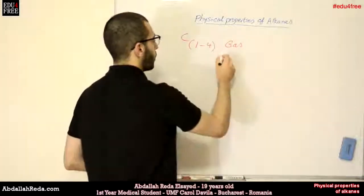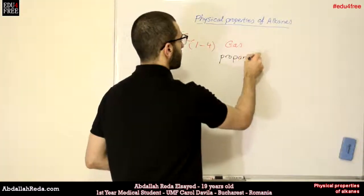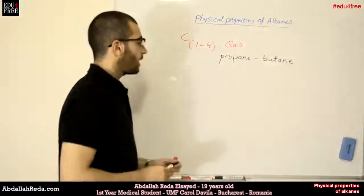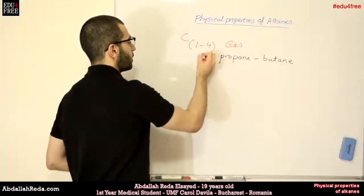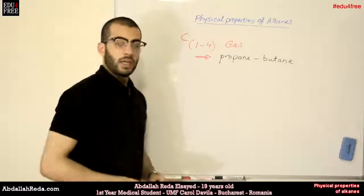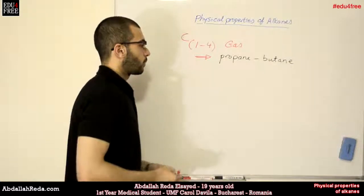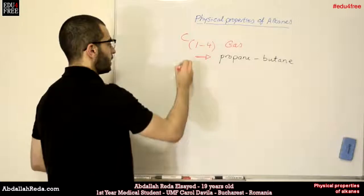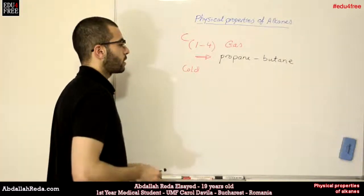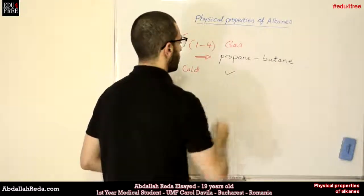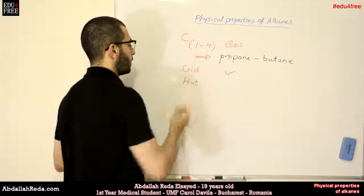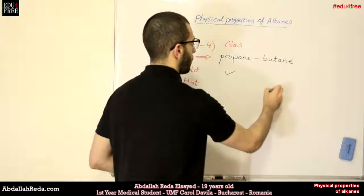Propane and butane are both used as gas for cooking and they are mixed together in proportions. In cold areas we will find in the mixture more propane than butane. In hot areas we will find the opposite, more butane than propane.